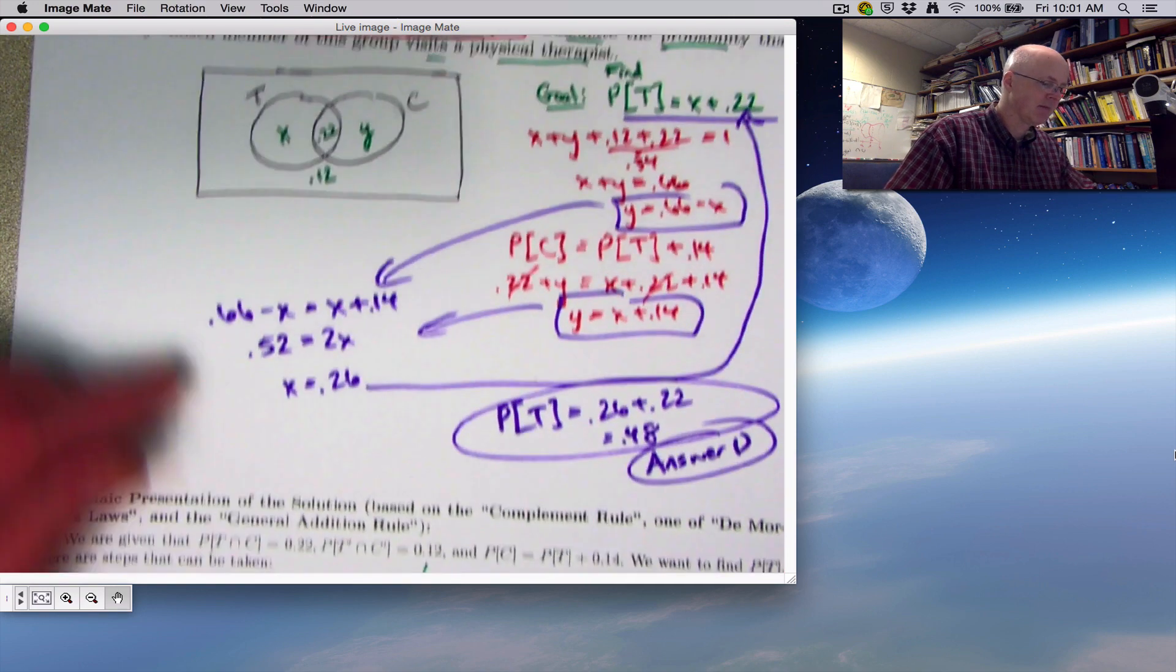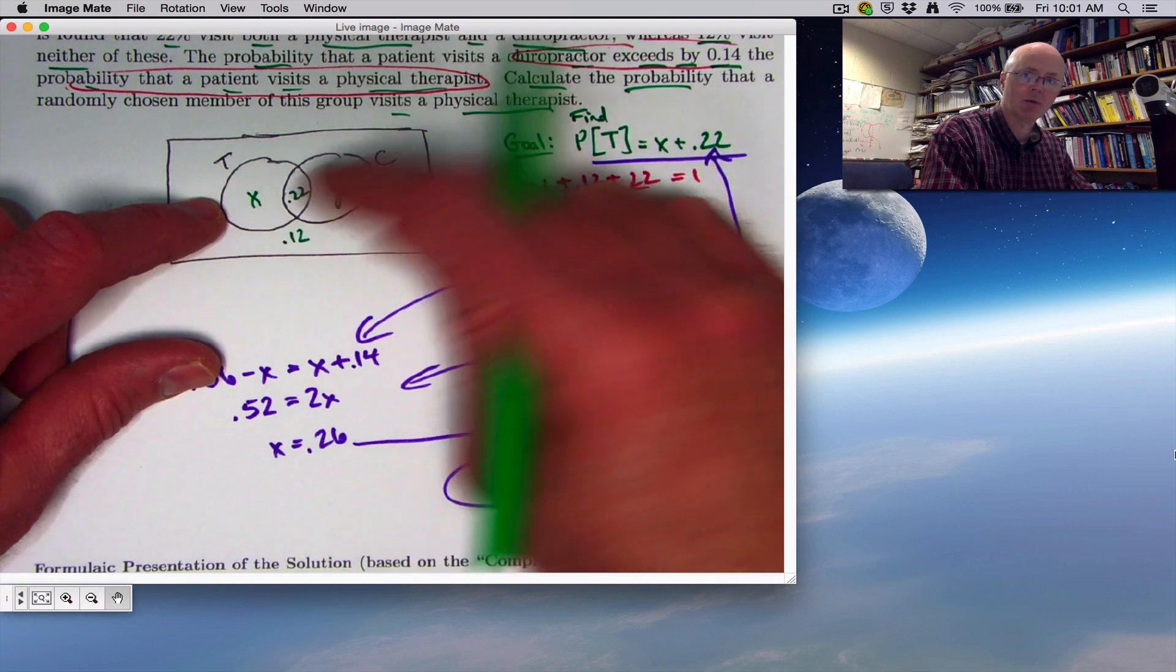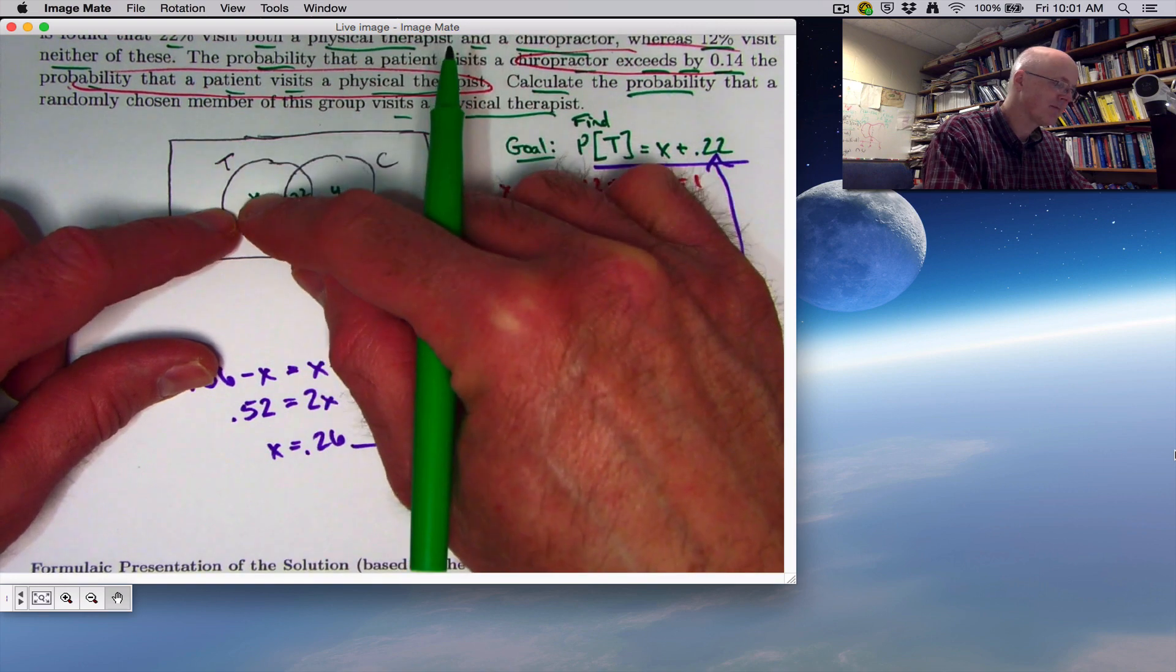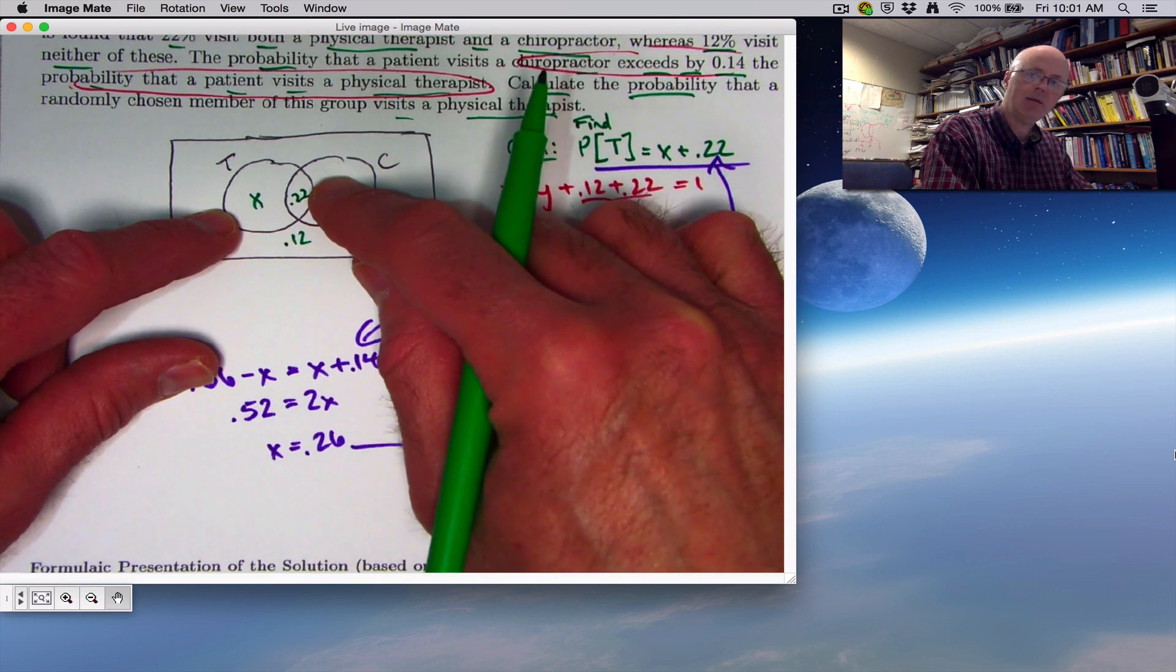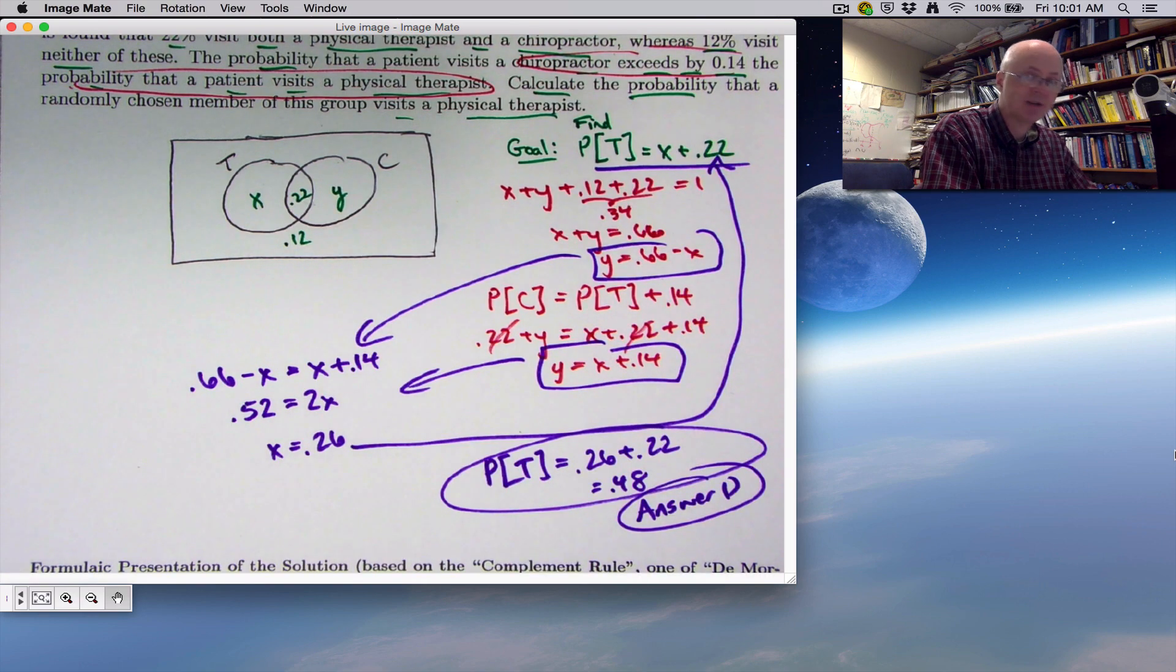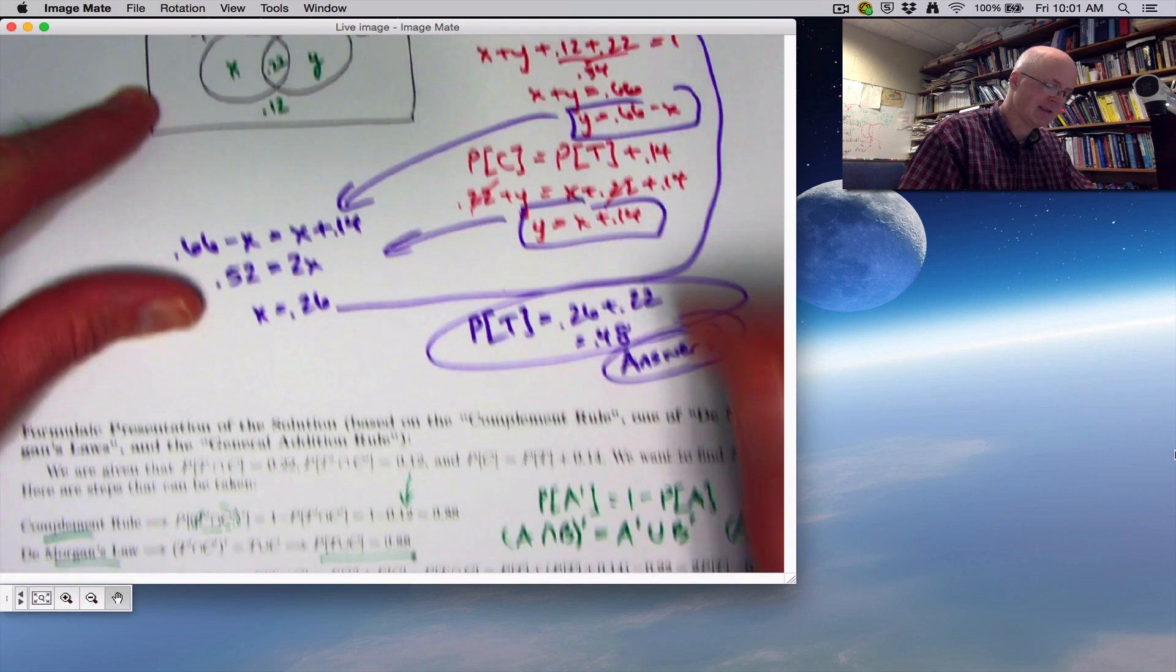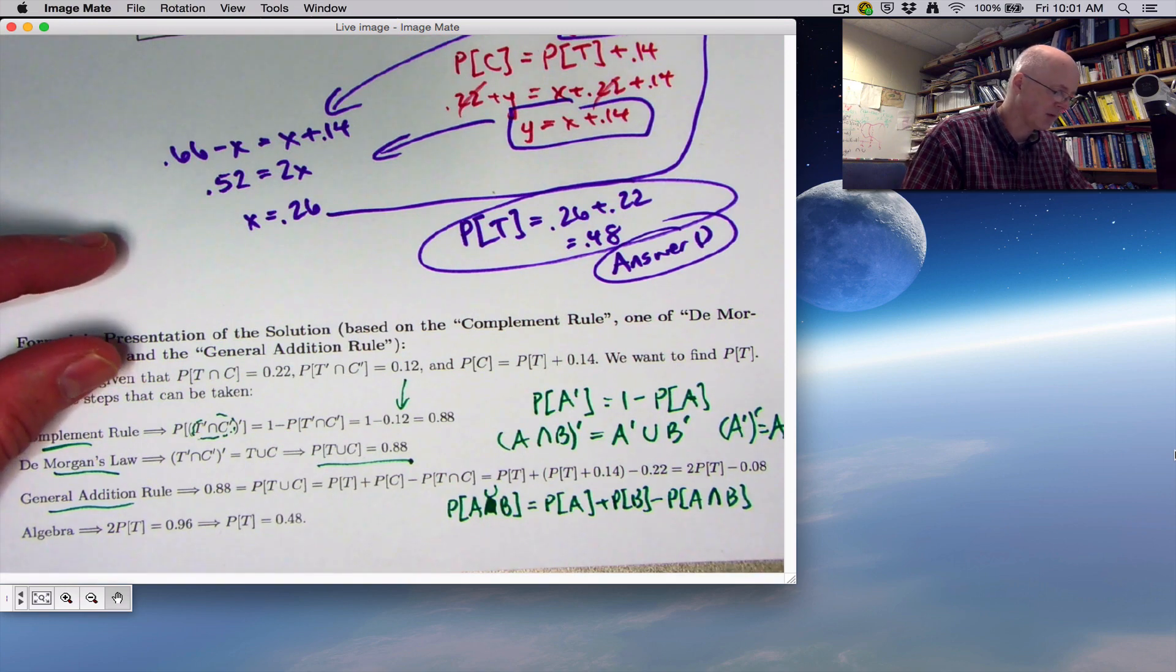In the diagram, you're asking what's the probability of being in T or C or both. You're taking the probability of T, essentially X plus 0.22, adding the probability of C, Y plus 0.22, but because you counted 0.22 twice you have to subtract it off at the end. That's why you have to subtract. That's the general addition rule and it always works.